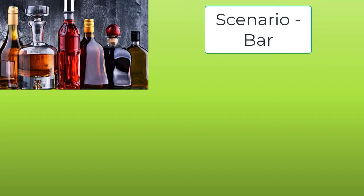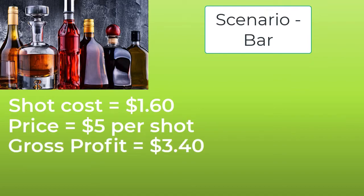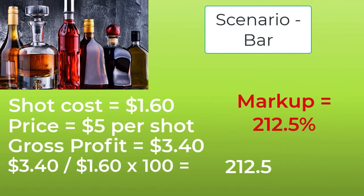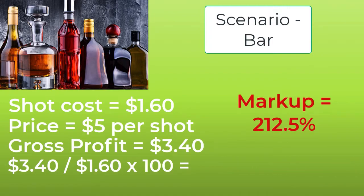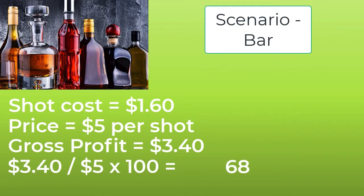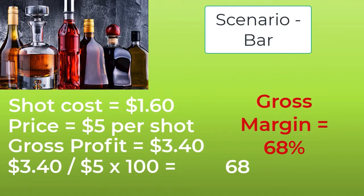Here are some simple assumptions. One drink costs the bar $1.60. The bar sells it for $5. The gross profit for the one drink is $3.40. When you calculate the markup, you take the profit divided by the cost times 100. In this case, you get 212.5 — your markup is about 212%. You can check the math by taking 212.5 times your cost, then adding that back to your cost to get $5. The gross margin is found by taking the profit divided by the selling price. You take the profit of $3.40 divided by the sell price of $5 times 100, and you get a gross margin of 68%. For each dollar of revenue, you make $0.68 in gross profit.